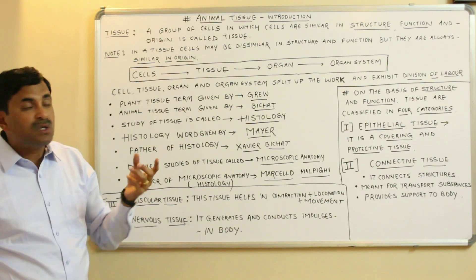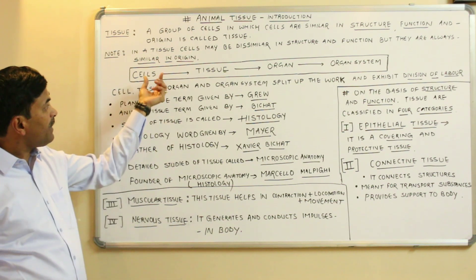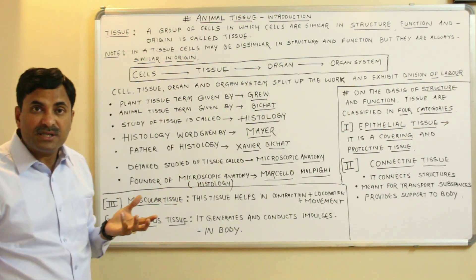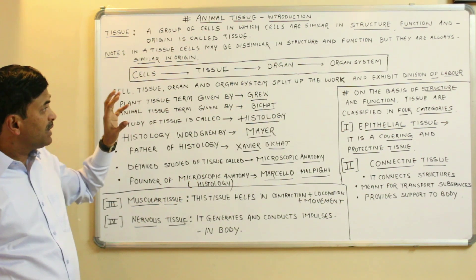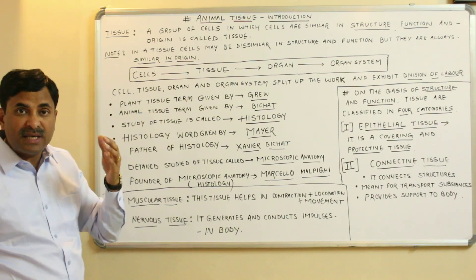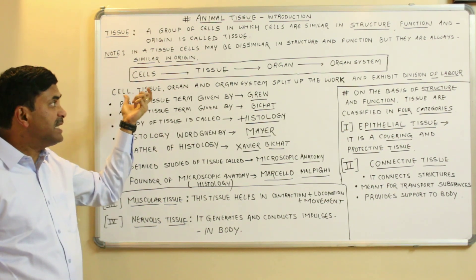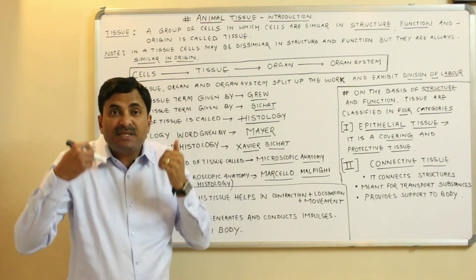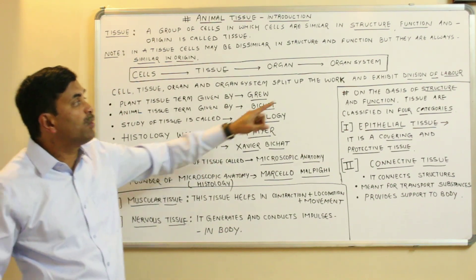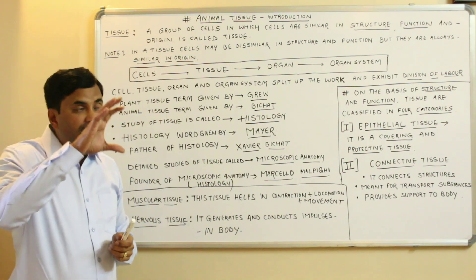So the question arises: how is this organ system formed? Cells combine to form tissues, tissues combine to form organs, and organs combine to form organ systems. Our body is composed of cells, tissues, organs, and organ systems, and all these split up the work — this division is called division of labor.